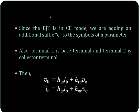Now since the BJT is in common emitter mode, we are adding an additional suffix E to the symbols of H parameters. So how will the equations we just wrote down using terminals 1 and 2 get modified?